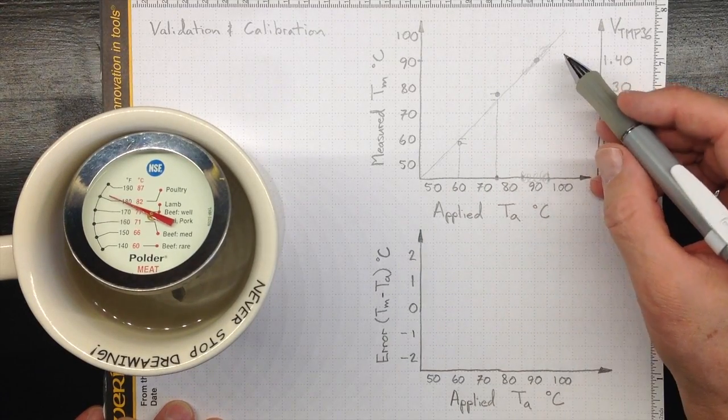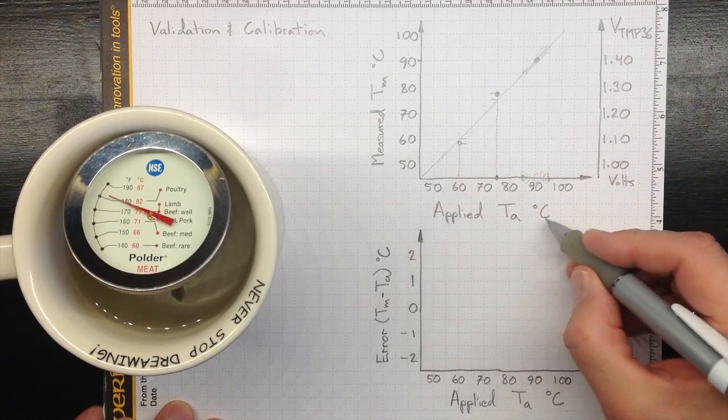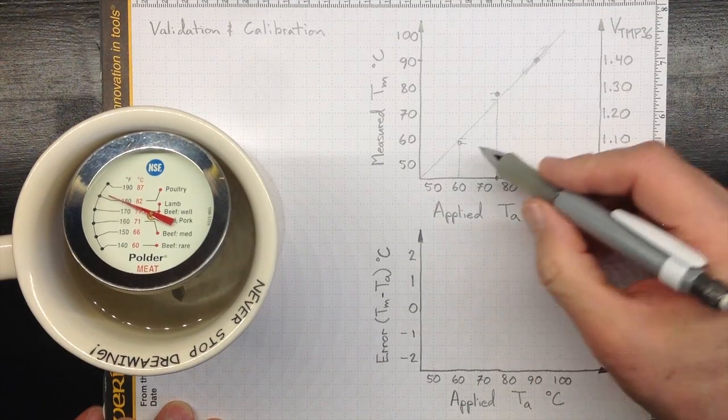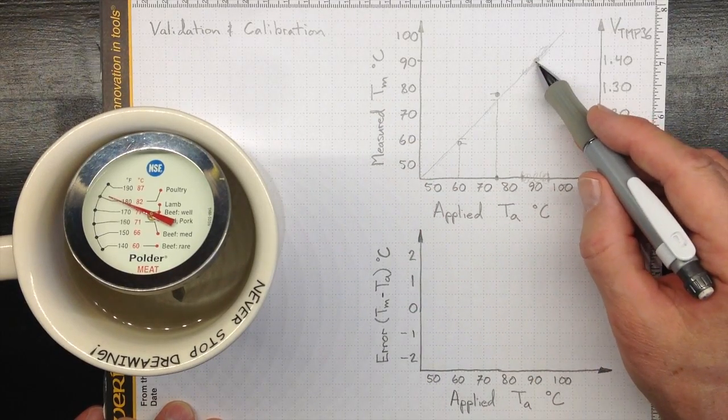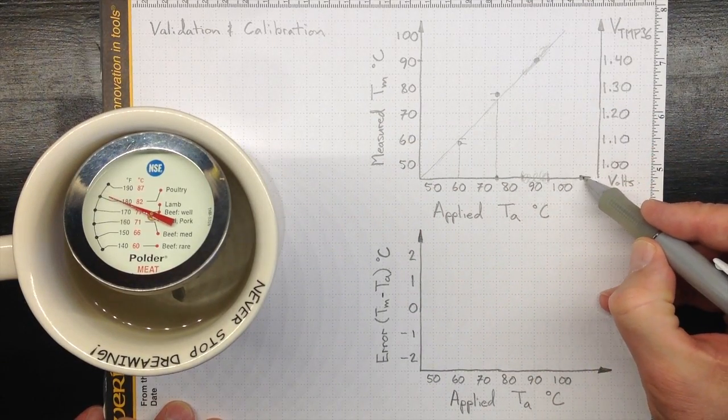If I did this repeatedly, with known values for the applied temperature, I'd wind up with a calibration that told me how my measured temperature varied from what I was actually trying to measure.